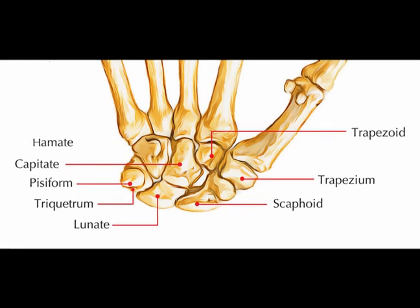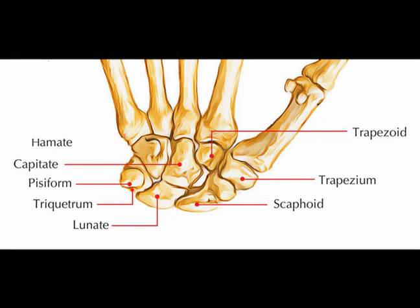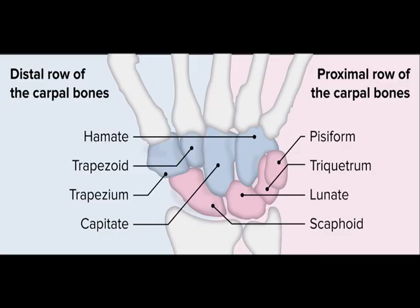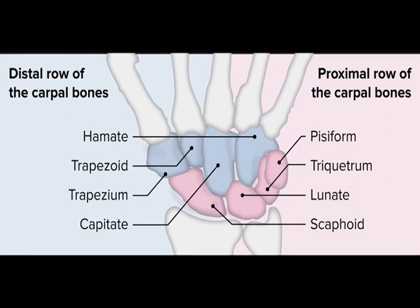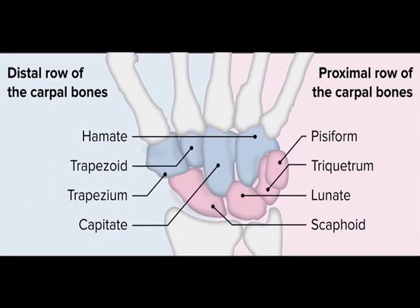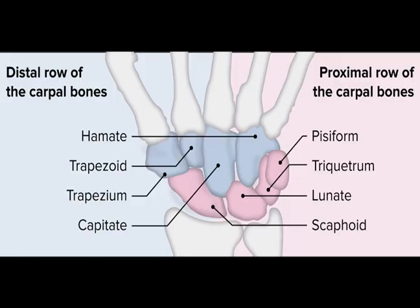The scaphoid forms the radial border of the proximal carpal row. The lunate is located between the scaphoid bone and the triquitrium bone and it lies near the median nerve. The triquitrium articulates with the pisiform, lunate, and hamate bones. The pisiform articulates with the triquitrium and serves as an attachment site for various tendons and ligaments.